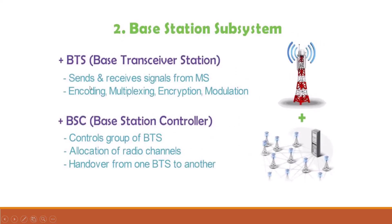The second subsystem is Base Station Subsystem. It also contains two components. Base Transceiver System — it is nothing but mobile towers. It sends and receives signals from mobile phones and performs various functions like encoding, multiplexing, modulation, and encryption. Then Base Station Controller — it controls a group of BTS, allocates radio channels, and hands over from one BTS to another.